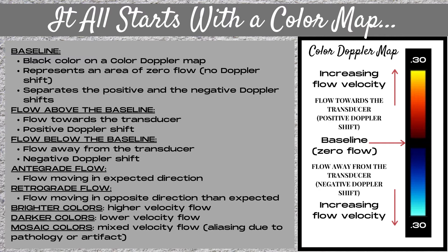The first color is black. The black color on a color Doppler map is the baseline. This represents an area of zero flow where there's no Doppler shift, and it separates the positive and the negative Doppler shifts. Flow above the baseline, or above the black color, represents flow towards the transducer, or a positive Doppler shift.